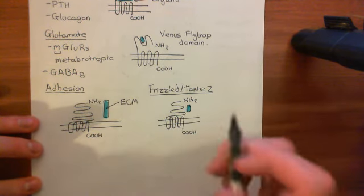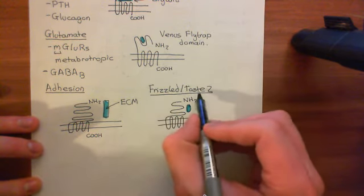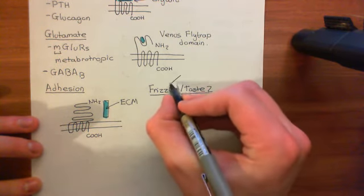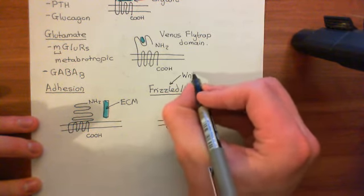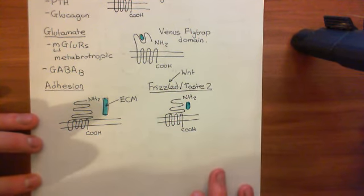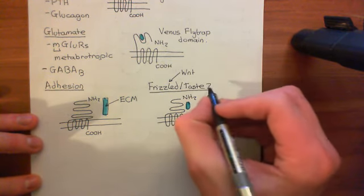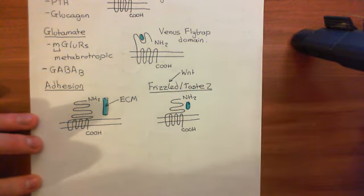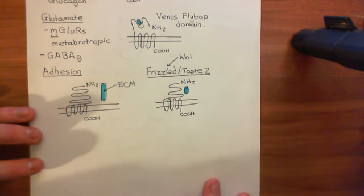The two main members of this family are the frizzled receptor and the taste-2 receptor. The ligand for the frizzled receptor is Wnt, and the frizzled receptor triggers activation of the Wnt/beta-catenin pathway. The taste-2 receptor's ligand is bitter-tasting molecules, and it is involved in the gustatory system.